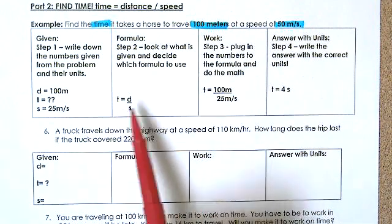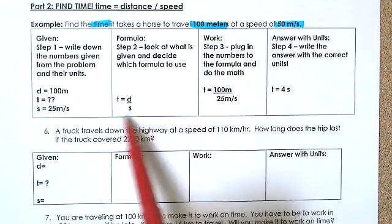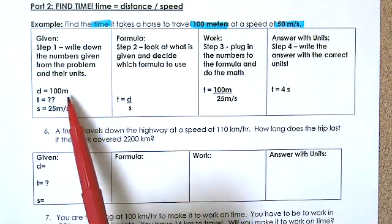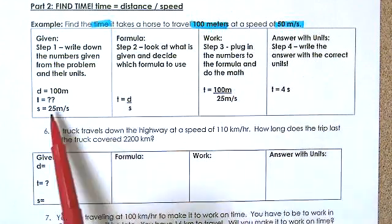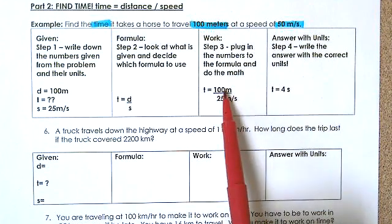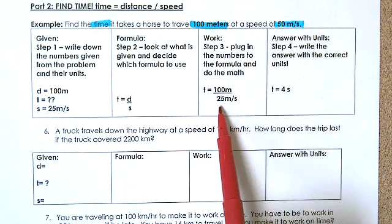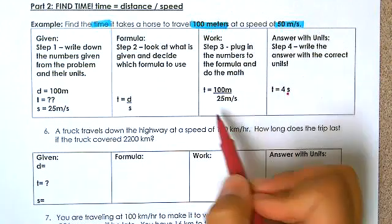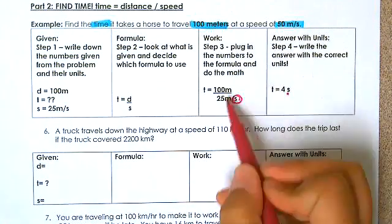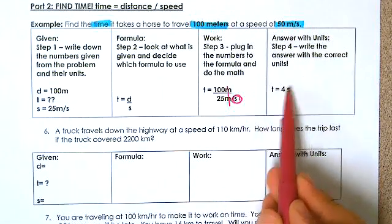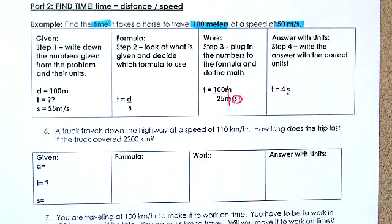Since we're looking for time, the formula is: time equals distance divided by speed. Plug in the numbers: 100 divided by 25. Put 100 in the calculator first, divided by 25, which gives you 4. The unit is seconds — the meters (m) cancel out, leaving just seconds. So the answer is 4 seconds.